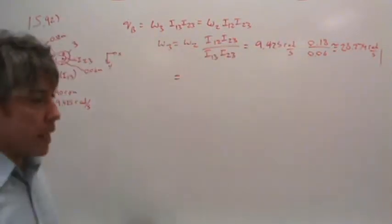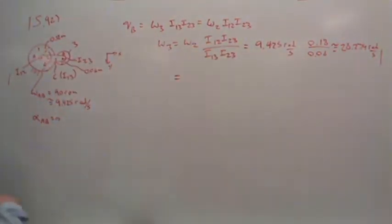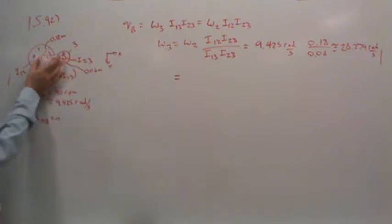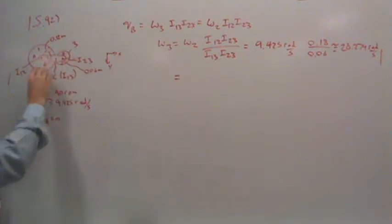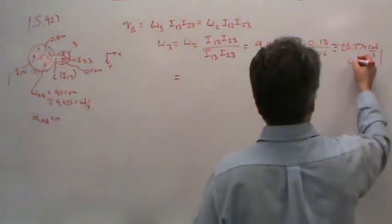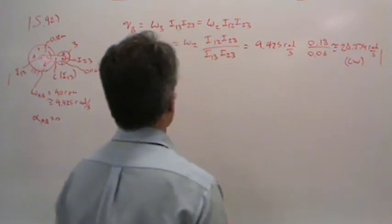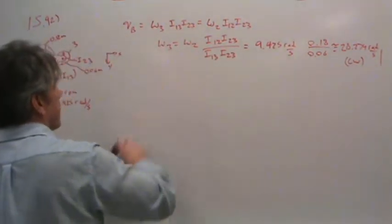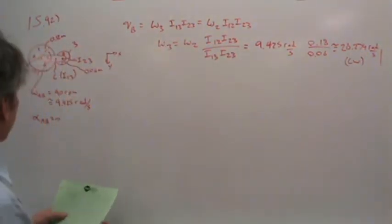Now, is that clockwise or counterclockwise? Well, remember, if the common instant center is outside of the two ground instant centers, then both bodies rotate in the same direction. That should make sense intuitively, that as the bar or this link rotates clockwise, B will also have to rotate clockwise in order to roll around 1. So this is just a clockwise rotation. So there's the velocity analysis. That's not what we were asked for.